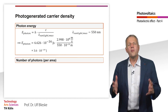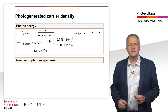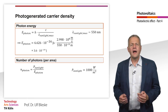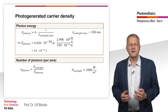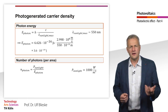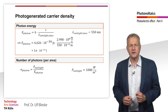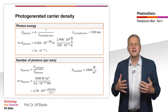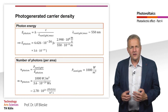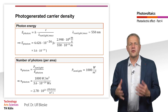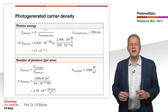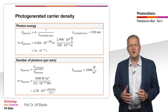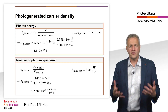Next, we calculate how many photons are absorbed by the solar cell. We divide the power density of the incident sunlight — 1000 W/m² — by the energy of a photon. This gives us the number of photons hitting 1 square meter of semiconductor per second, namely about 2.8 × 10²¹ photons per square meter per second.